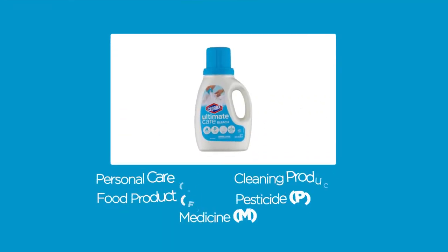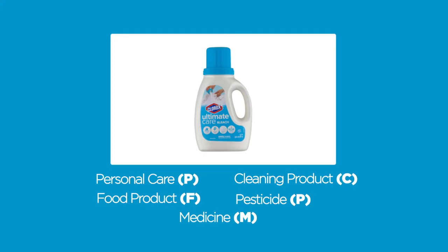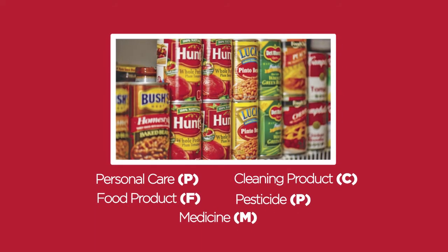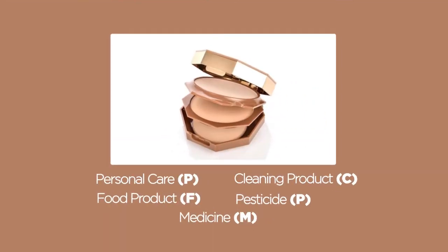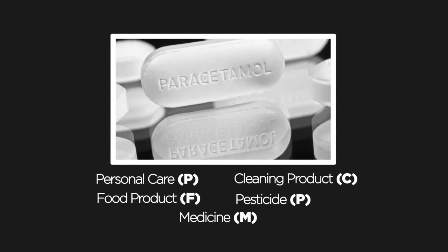Number 1 is bleach. The answer is C. Number 2 is canned goods. The answer is F. Number 3 is face powder. The answer is P. Number 4 is paracetamol. The answer is M.